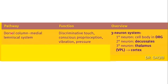The pathway we are discussing is the dorsal column medial lemniscus system. Its function includes discriminative touch, conscious proprioception, vibration, and pressure. The overview involves three orders of neurons: the first-order neuron cell body is in the dorsal root ganglion; the second-order neuron decussates to the opposite side — this is the great sensory decussation in the medulla oblongata; and the third-order neurons are in the VPL nucleus — ventral posterolateral nucleus — of the thalamus, which then reaches the sensory cortex.